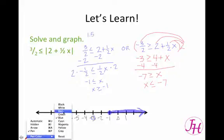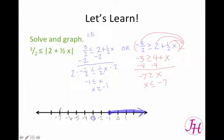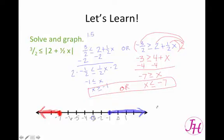And then our x is less than or equal to negative 7, so we have a closed circle on negative 7. And then we're going to the left, because it was less than. So there's your graph, and up here we have or. So x is greater than or equal to negative 1, or x is less than or equal to negative 7, and there's the graph.